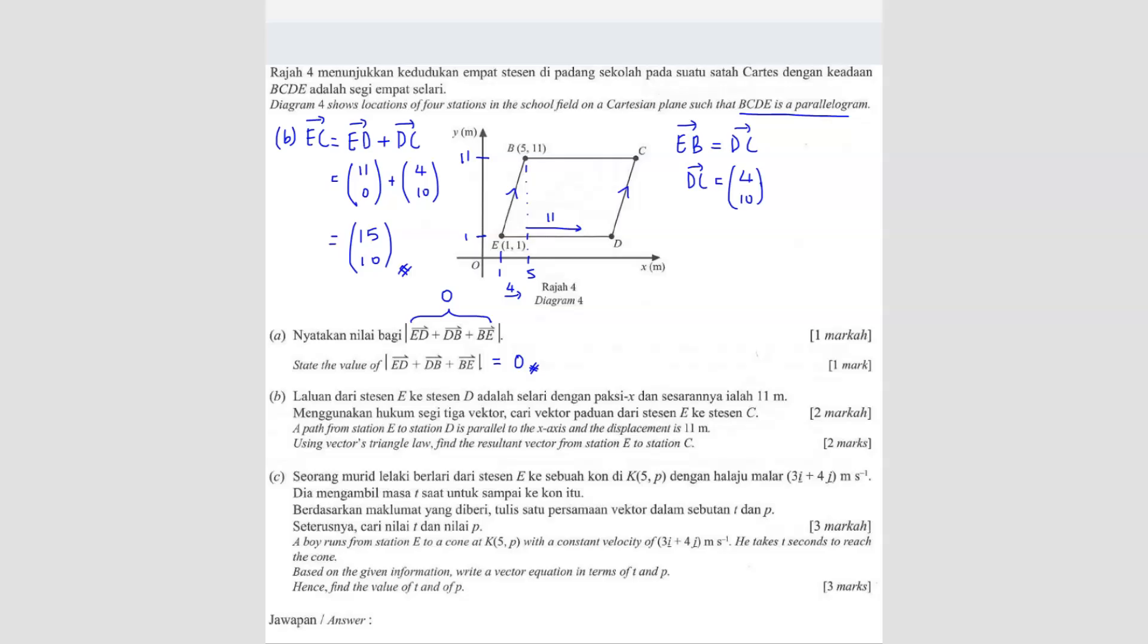Question C, a boy runs from station E to cone K. So let me erase first so that y'all can see clearly. So they're saying that there's a boy, he ran from station E to cone at K. So where is K? You see, they give you K is what?